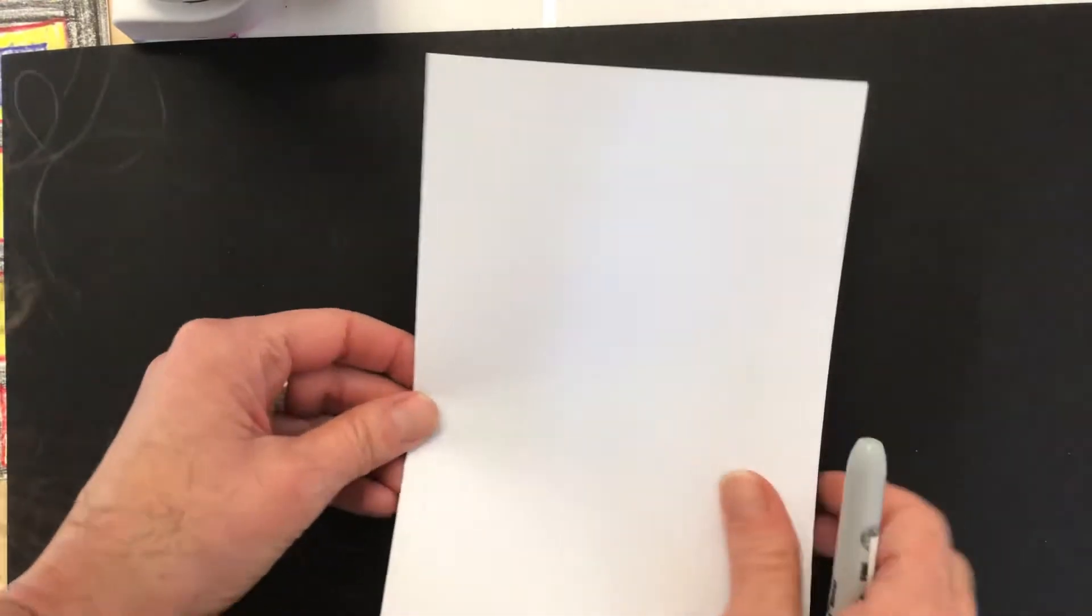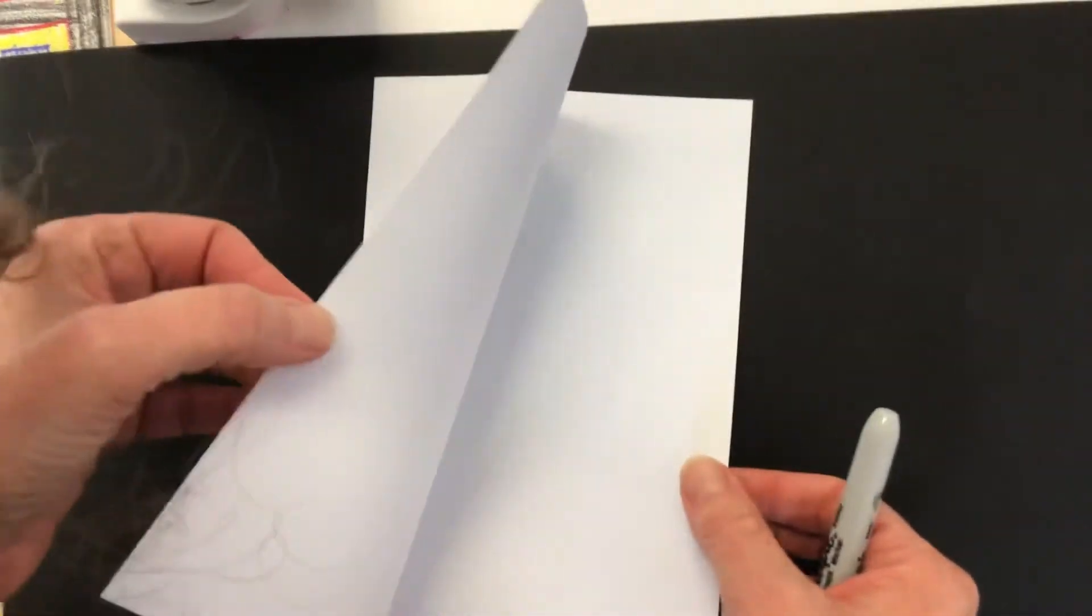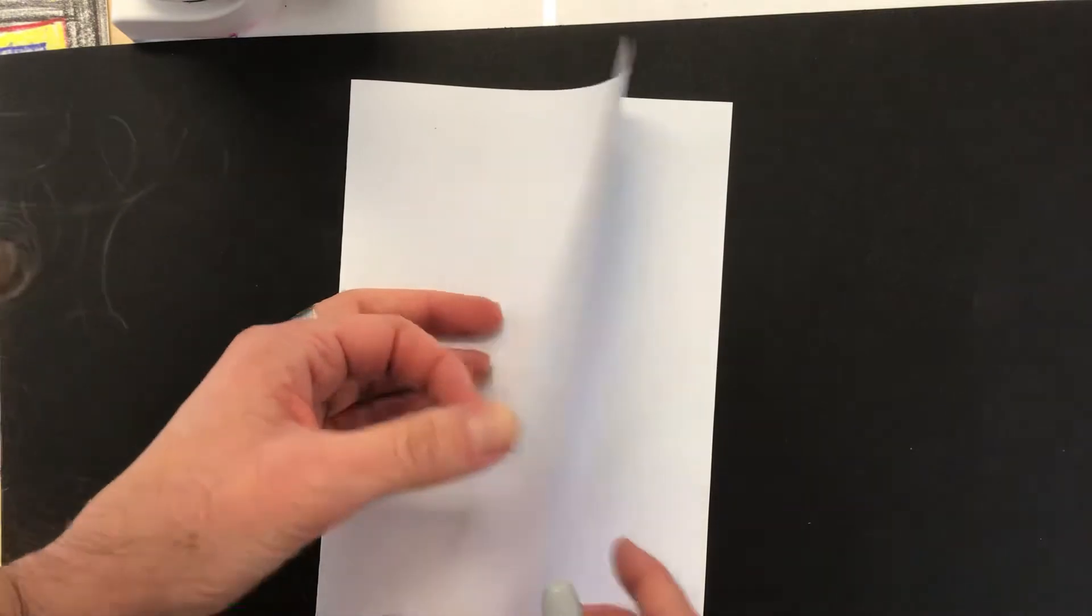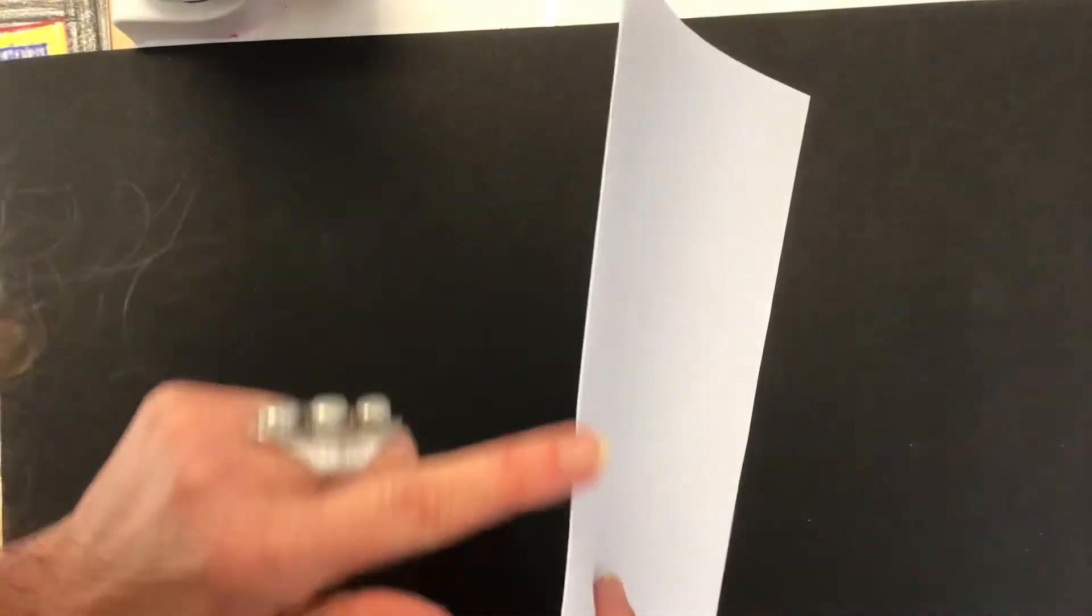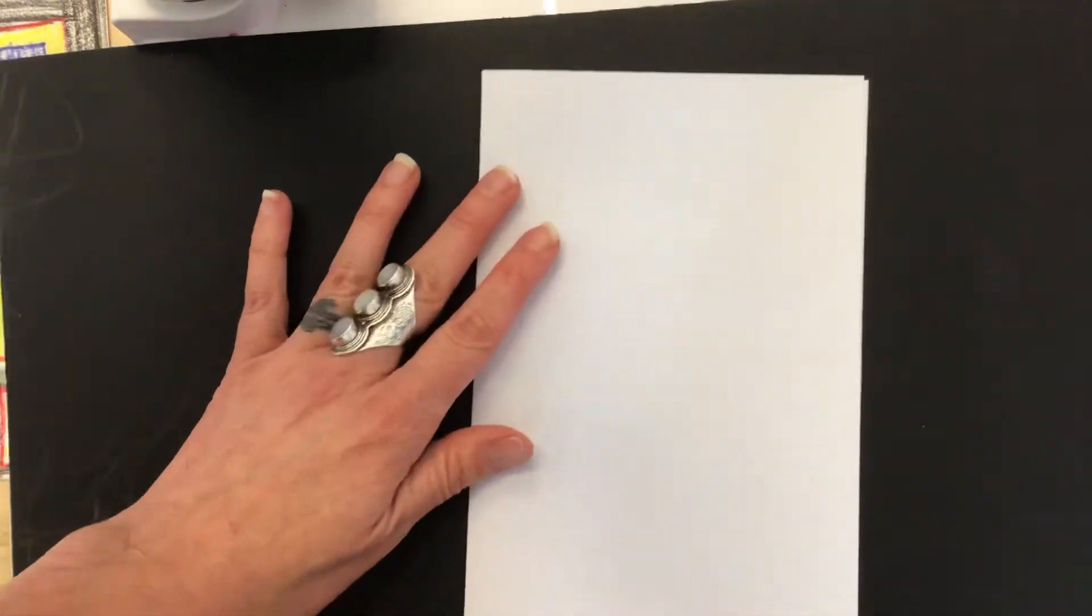Here's the key to making this work. This edge is the open edge. You do not want to draw on the open edge of your paper. This edge is the folded edge. Here is where we want to draw.